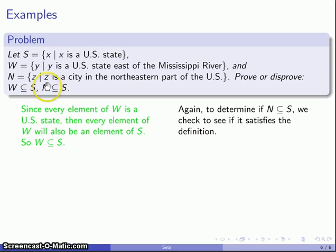What about the second question: Is N ⊆ S? We want to check if it satisfies the definition, which requires that everything in N be also an element of S. Here's where understanding what the set consists of is useful. If I were to list some of the things in N—cities in the northeastern part of the United States—these are things like New York City, Boston, Wrentham, Massachusetts, and a whole bunch of other places.